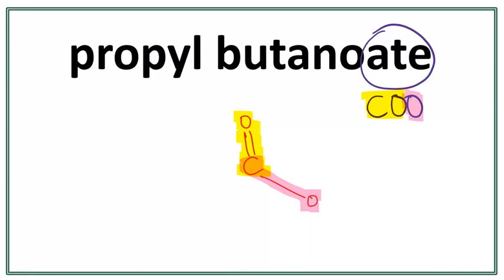Let's work on the parent chain. This but- here tells us that there are four carbons in the longest carbon chain, the parent chain. A trick to draw this is that you always count till one less than the number of carbons you want to draw.